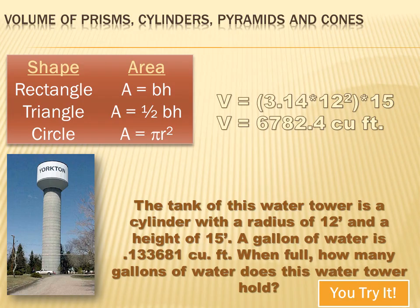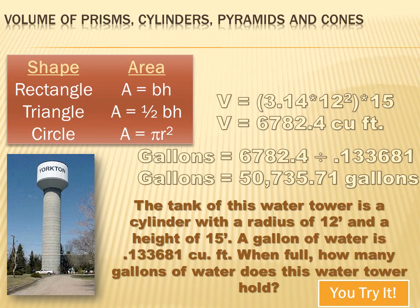Well, now we've got to figure out how many gallons 6,782.4 cubic feet is. And they tell us that one gallon is .133681 cubic feet. So how many times will .133681 go into 6,782.4? Well, we'll divide it, and we'll come up with 50,735.71 gallons.